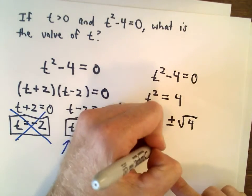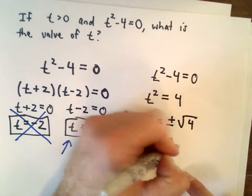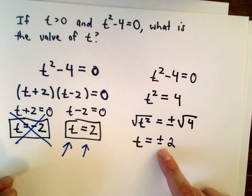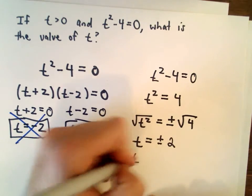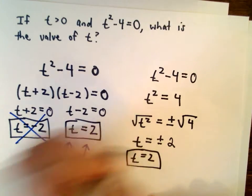We've got plus or minus the square root of 4, and the square root of 4 is 2. Again, we have to keep the positive solution, so we know that t equals positive 2 would be the correct answer.